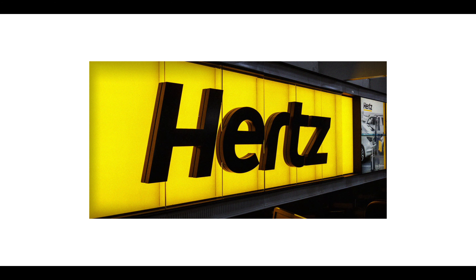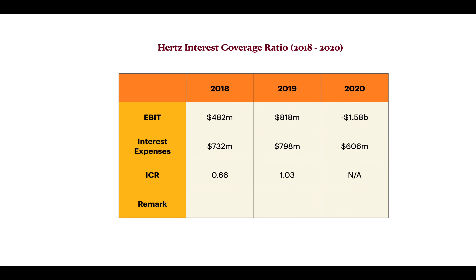Now let's analyze the Interest Coverage Ratio for Hertz car rental company and see what went wrong since 2018. In 2018, their EBIT was 482 million dollars and their interest payment was 732 million dollars — they were not making enough to cover their interest payment, resulting in an ICR of 0.66, which is definitely a red sign. In 2019 they improved earnings to 818 million dollars, but interest was still approximately 800 million dollars, so they were barely making enough to pay their interest — they were struggling even before COVID.